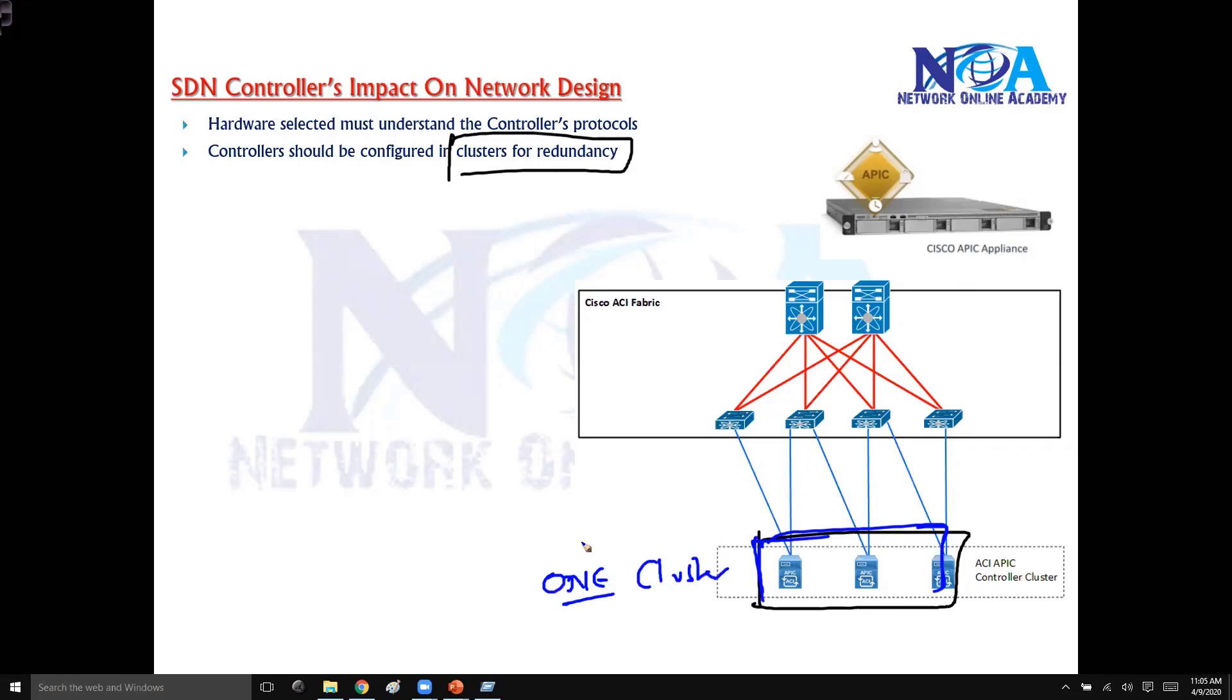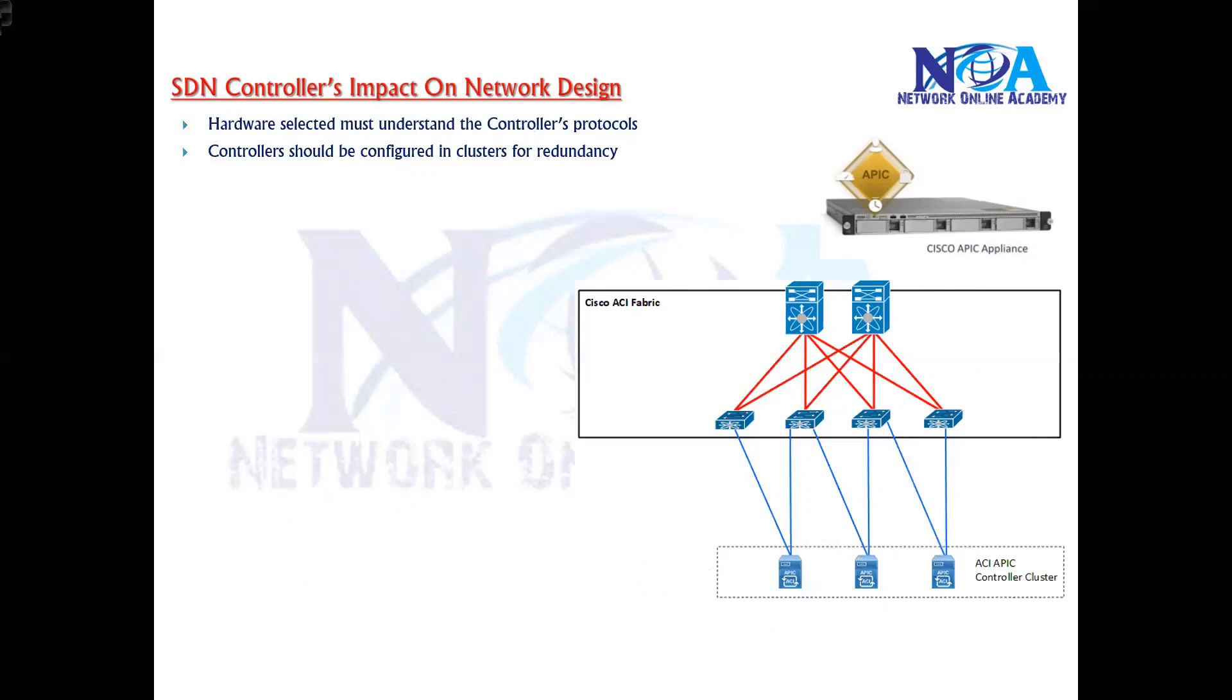This means it is going to behave just like one single big controller, and with this we can provide failover. If any one of the controllers fails, the remaining will take care. It will provide high availability so that most of the time the controller is available. It will also improve the performance because when you're running multiple controllers, the performance will be better. We need to plan the controllers in clusters, at least two or three in a group.